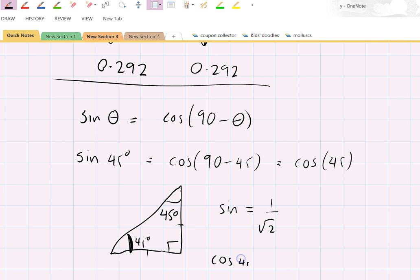And the cosine of 45 degrees equals adjacent over hypotenuse which is again 1 over root 2.